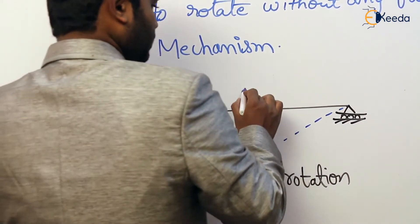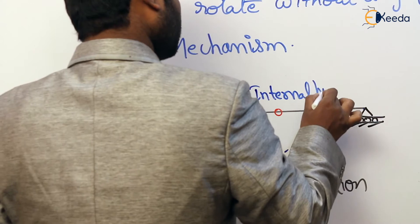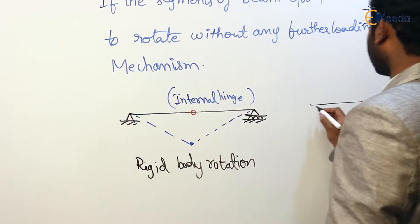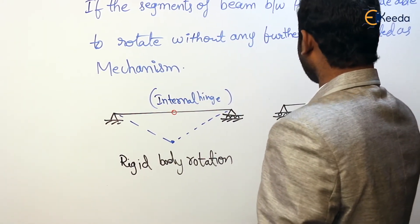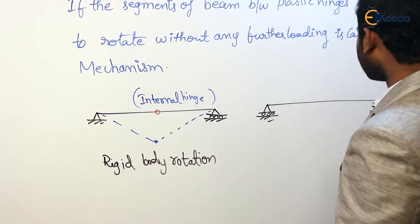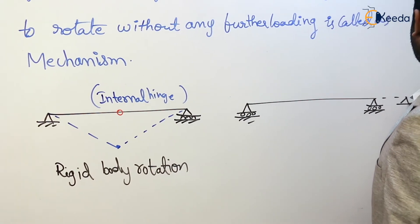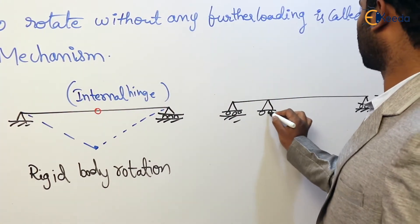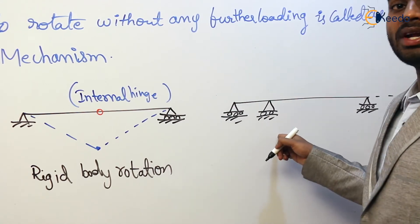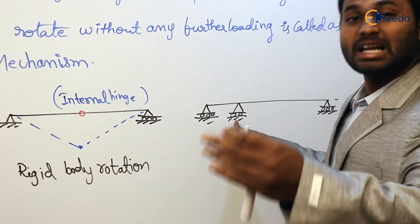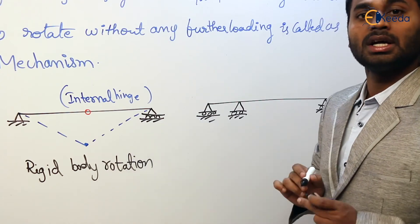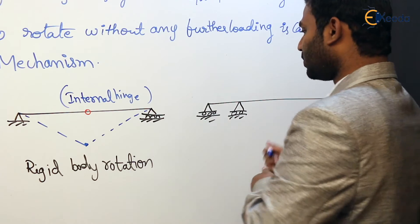This is an internal hinge. Take another simply supported beam. This beam at both ends has roller support. Upon horizontal loading, we know that this beam will translate in this direction, from here to here. This is known as rigid body translation — from here to here the beam has translated. If such cases happen in our structure, then it is known as mechanism.